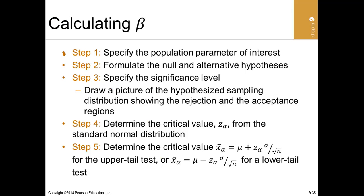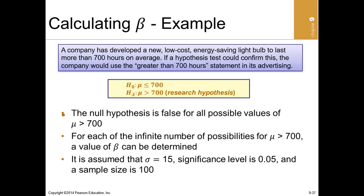The observed alpha is the same as the computed p-value. Once you can compute your p-value, you can calculate beta by subtracting alpha from one.